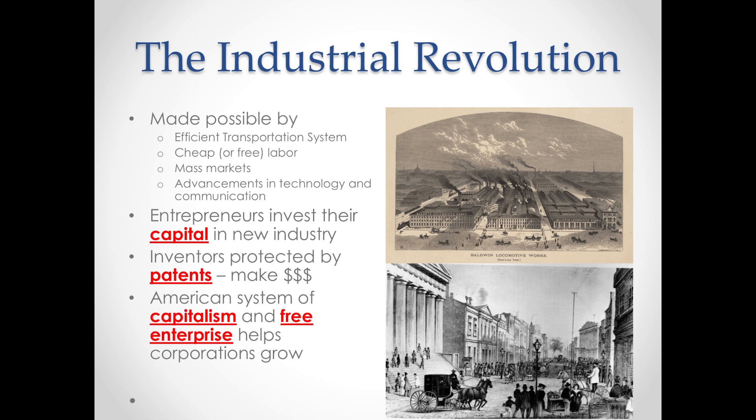Other things needed for the industrial revolution include entrepreneurs — people willing to invest capital into a new industry. You need investors protected by patents so they can profit from their work. And you need a system where people are free to pursue what will make them money without government direction — that's the American system of capitalism and free enterprise. During this period, corporations had a lot of free reign to expand and grow.